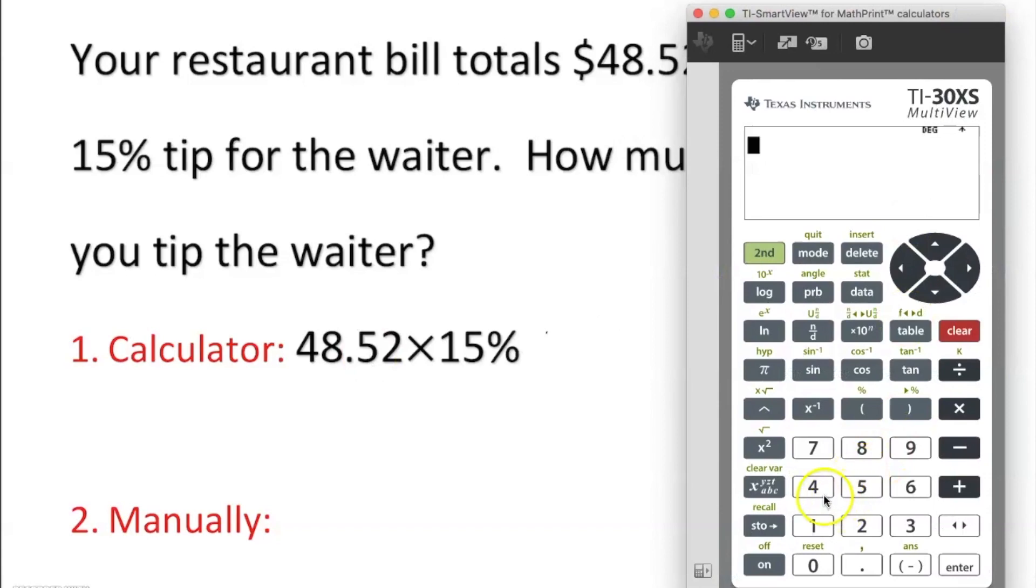We can multiply it many ways in the calculator. 48.52 times - we can say 15 and second, open parenthesis, percentage, enter, and we round it up. Or we can just say 48.52 times 0.15, which is 15%, enter. Both of them are the same.